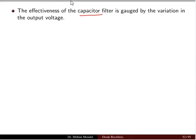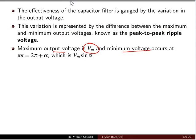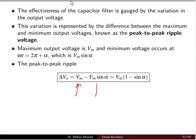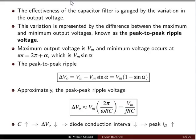The effectiveness of the capacitor filter is characterized by the variation in the output voltage, represented by the peak-to-peak ripple voltage — the difference between maximum and minimum output voltage. The maximum output voltage is Vm and the minimum occurs at ωt = 2π + α as Vm sin α, giving ripple voltage = Vm(1 − sin α). Approximately, the peak-to-peak ripple voltage equals Vm · 2π/(ωRC), or Vm/(f · RC). When the capacitor value is larger, the ripple voltage and voltage fluctuation decrease.